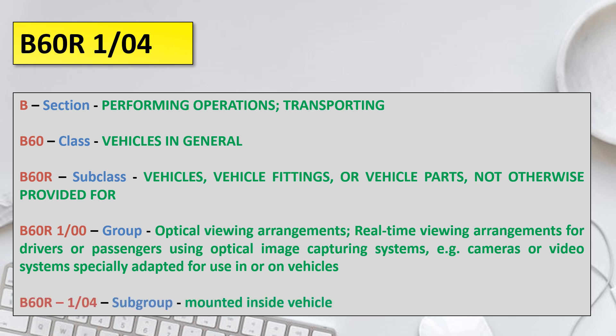Narrowing down to the subgroup, B60R 1/04 specifies optical viewing arrangements that are mounted inside the vehicle. There may be another subgroup for arrangements mounted outside the vehicle. So if you are specifically looking for patent documents about optical viewing arrangements mounted inside vehicles, this is the subgroup — B60R 1/04 — that you need to select.